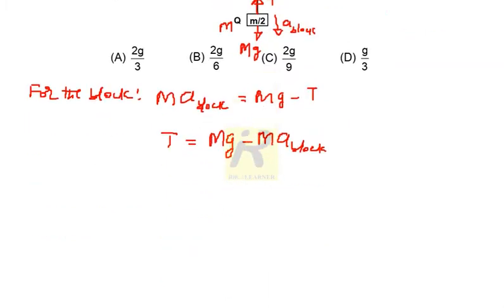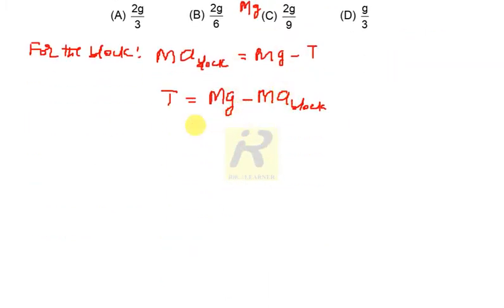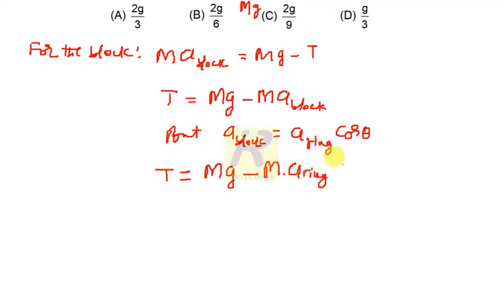Now, I simply use that one here. So, but what I can write, acceleration of the block is equal to acceleration of the ring multiplied by cos theta. So then what happens to this equation? This is simply mg minus, it is m into a ring into cos theta. And I call this equation 1.